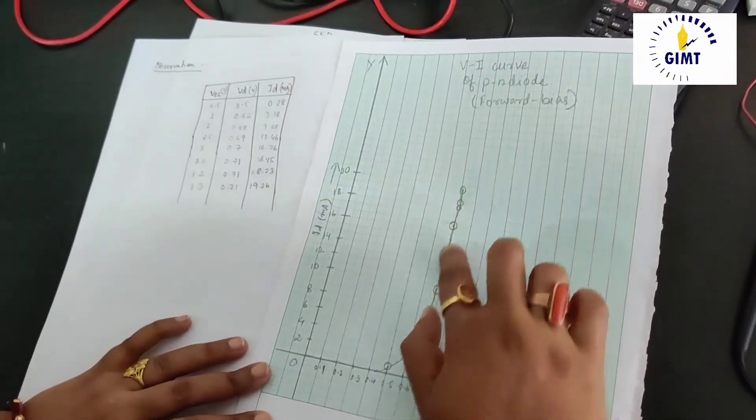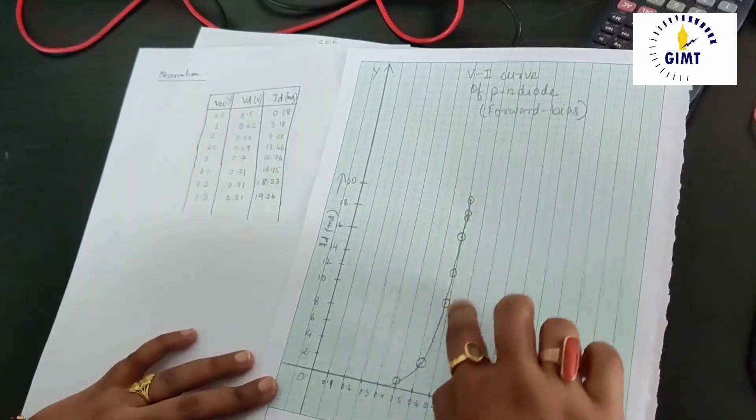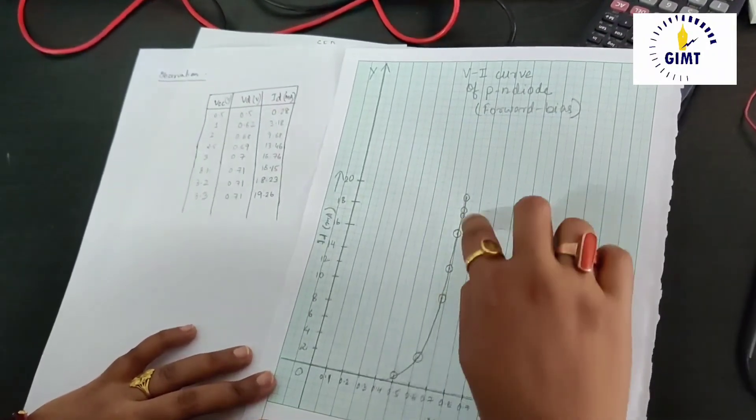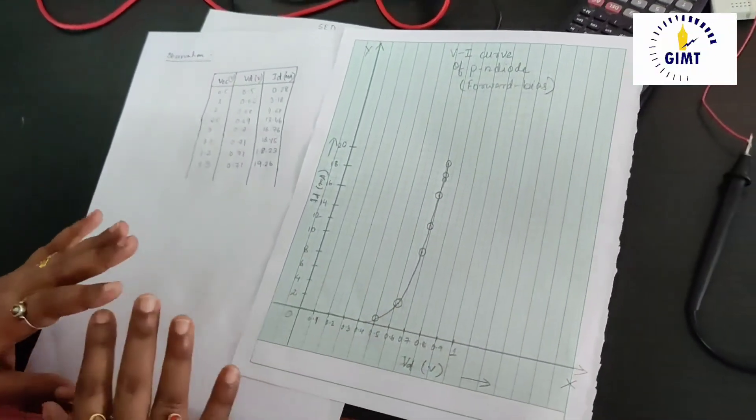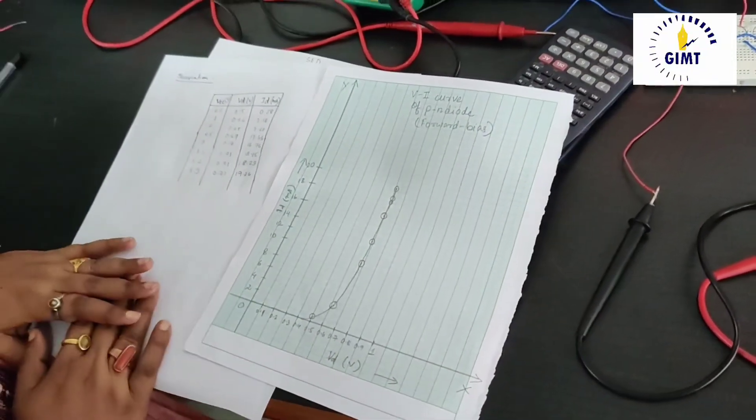Whereas, for this point of the curve, since the current is very, very high, I can say that the resistance is minimum here. This is the forward bias Vi curve of a normal PN junction diode.